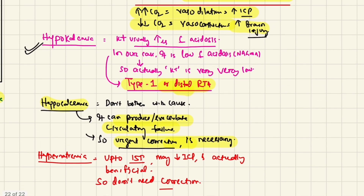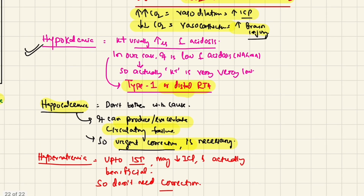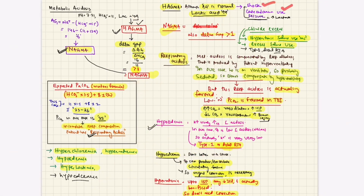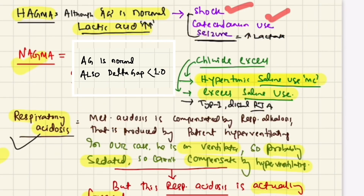Regarding hypernatremia: in traumatic brain injury, a sodium level up to 155 actually decreases ICP and is beneficial. So the hypernatremia may not need correction right now — it is actually favorable in this TBI case.